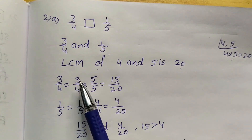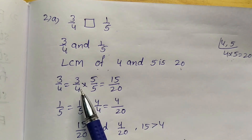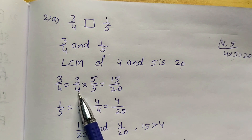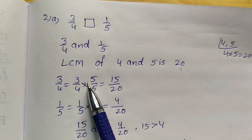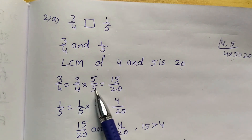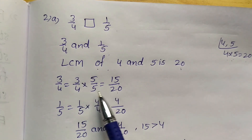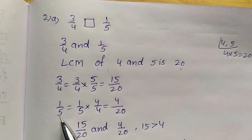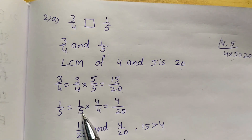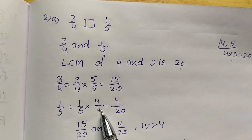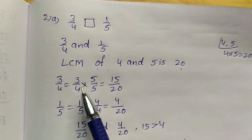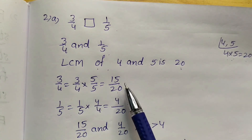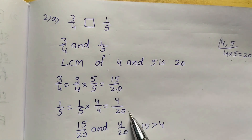So 3 by 4 equals 3 by 4 into — we have to multiply 4 by 5 to get 20, so multiply the numerator also — 3 by 4 into 5 by 5 equals 3 into 5 = 15, and 4 into 5 = 20. And 1 by 5 equals 1 by 5 into — to get 20 multiply by 4 — 1 into 4 = 4 and 5 into 4 = 20. We got equivalent fractions: 3 by 4 is 15 by 20, and 1 by 5 is 4 by 20.